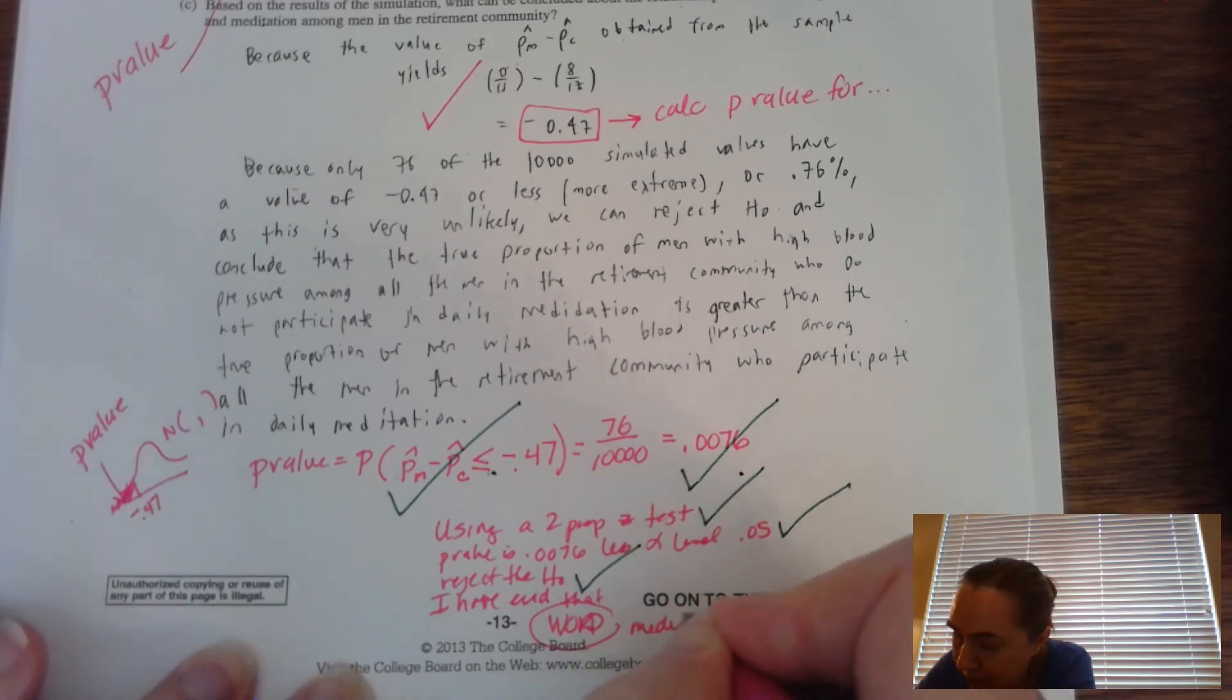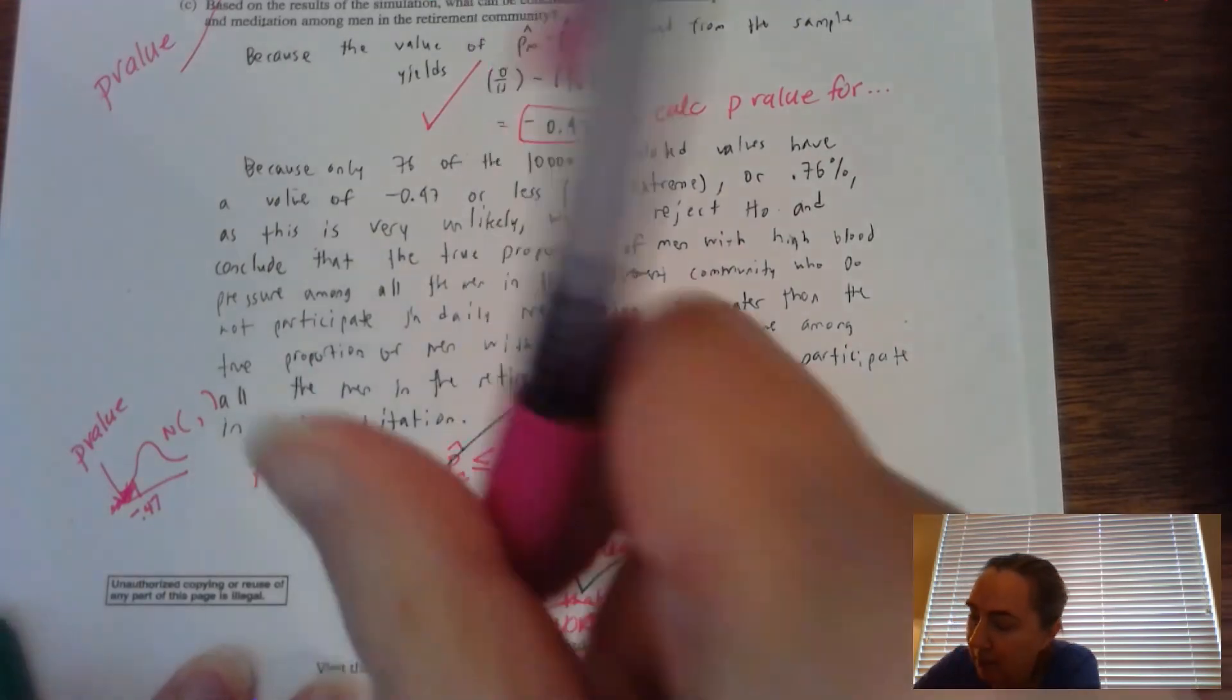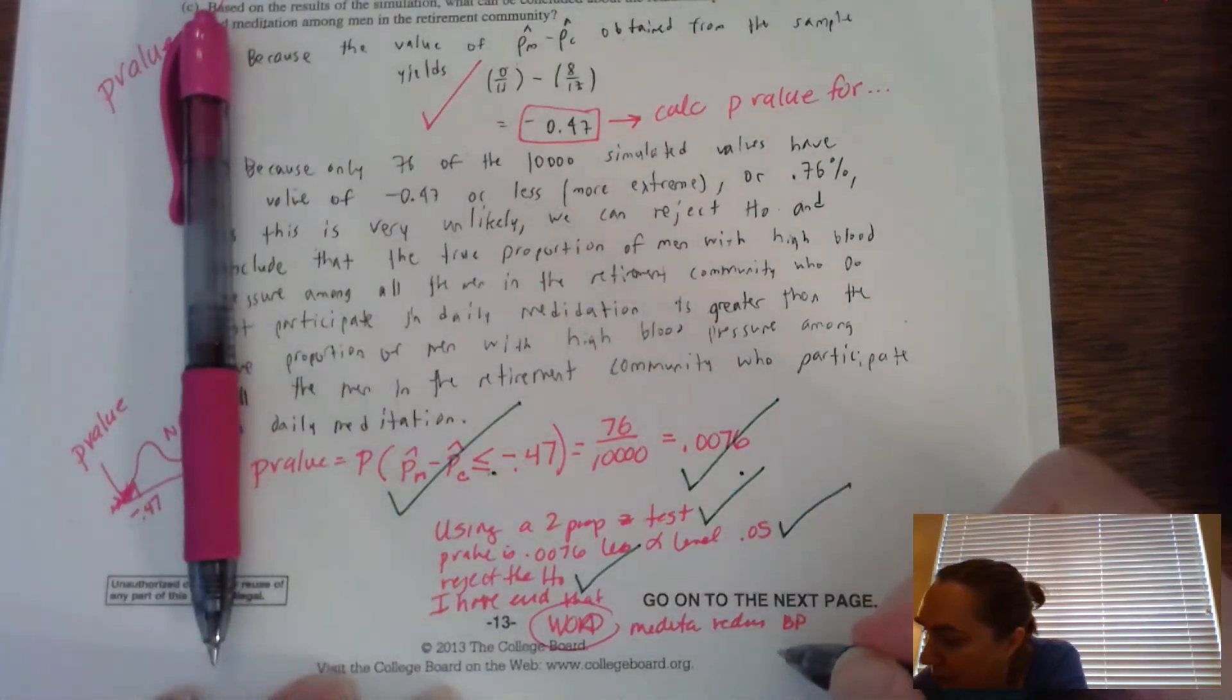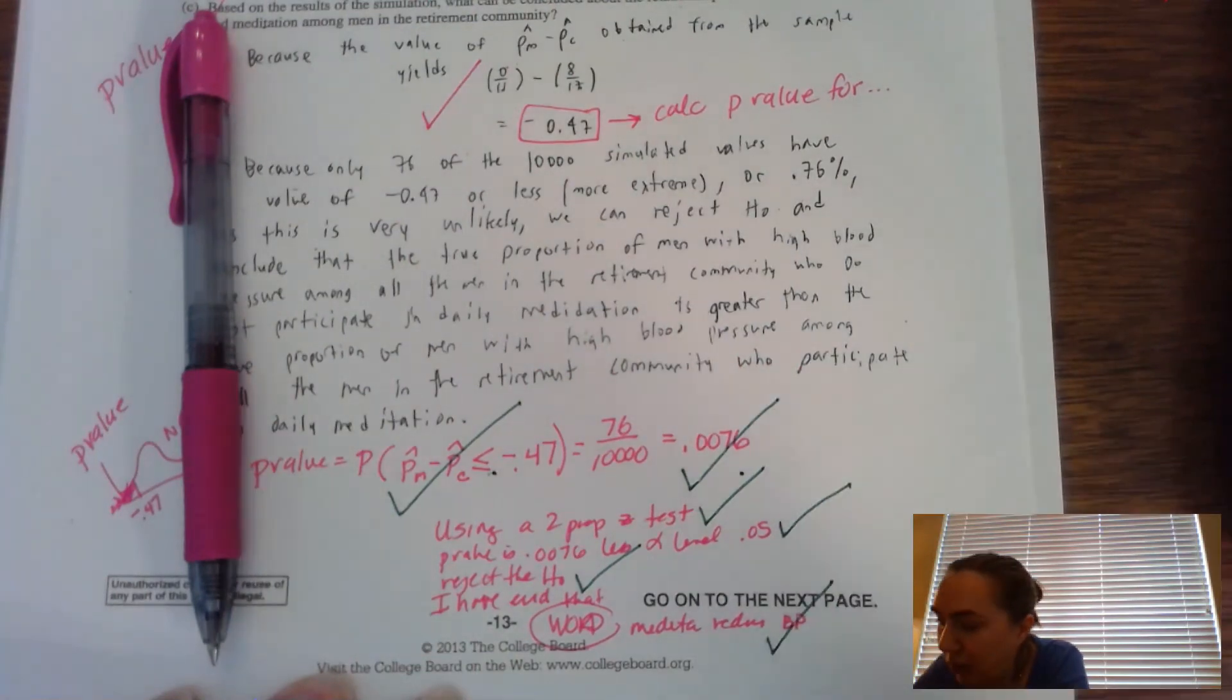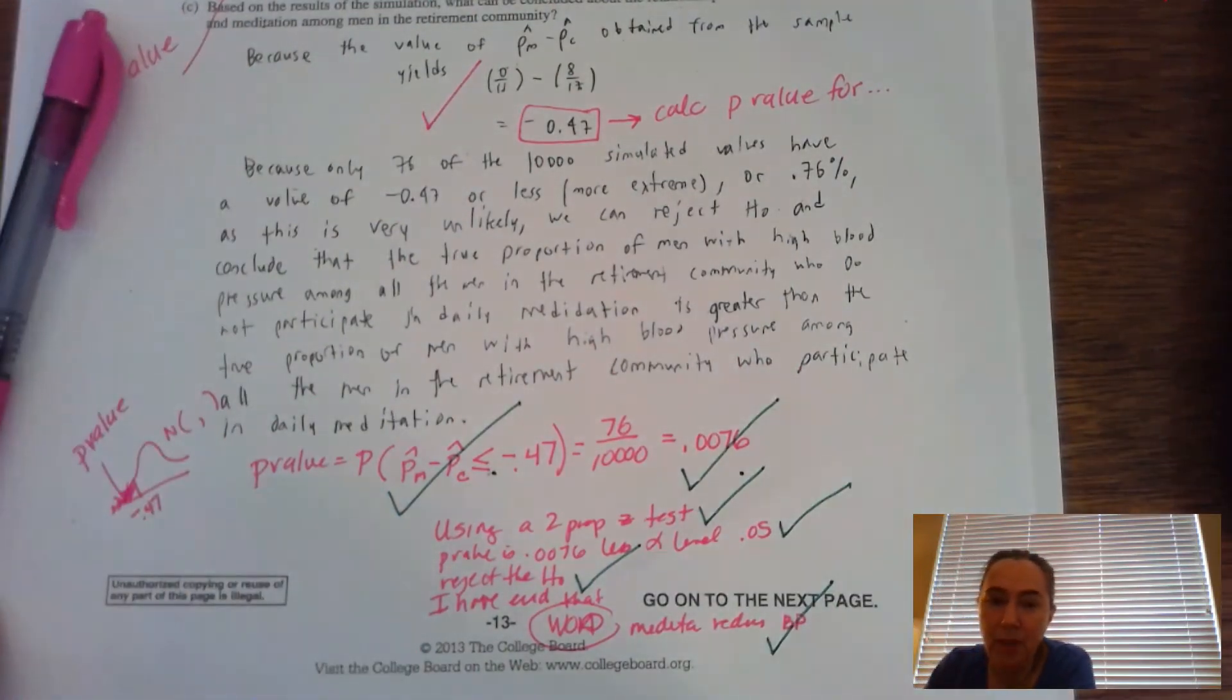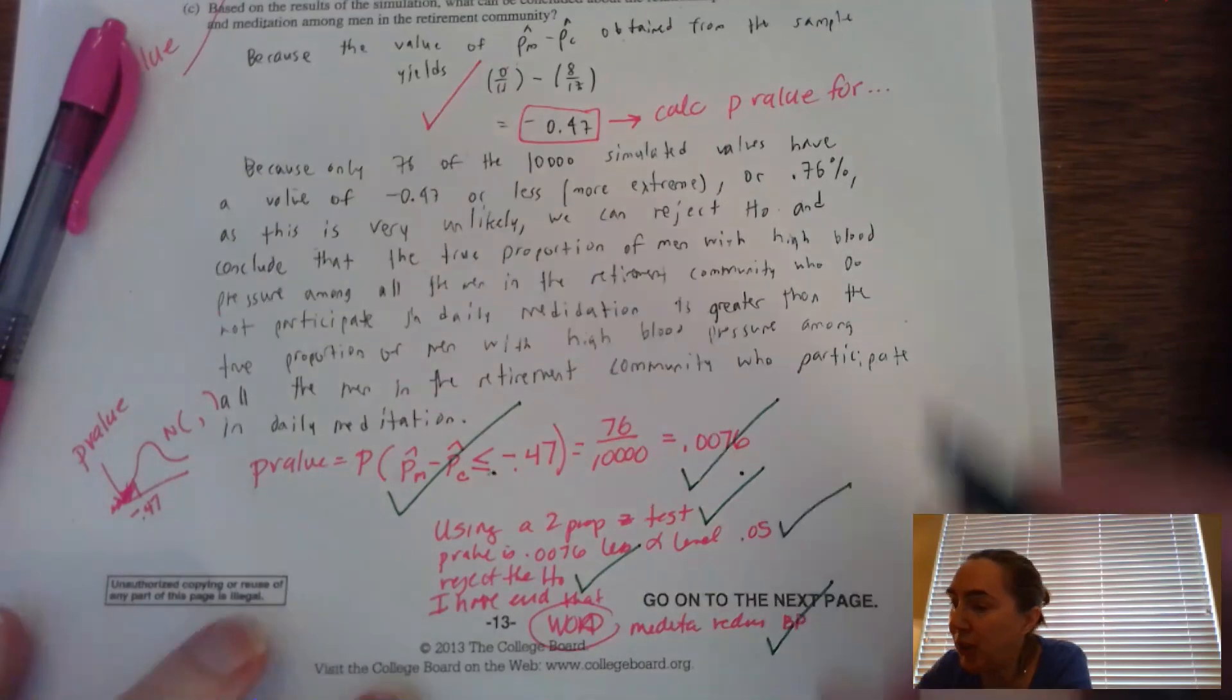So that, that meditation reduces blood pressure. And that right there would be the last check right here for this particular problem. So there are seven checks for this one.